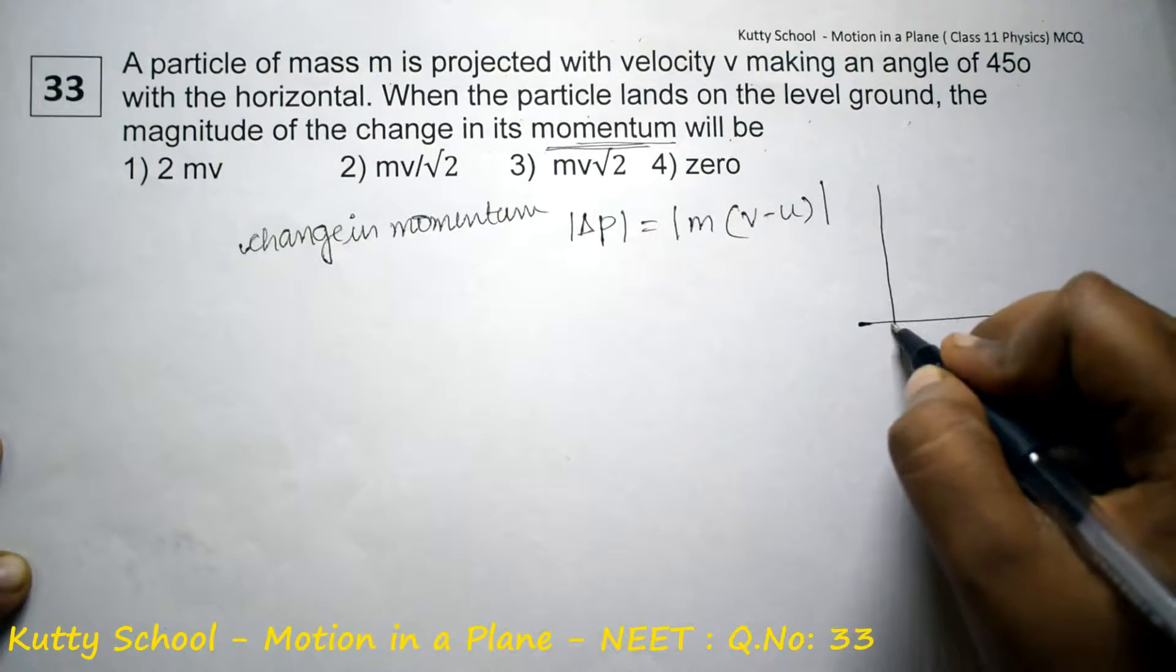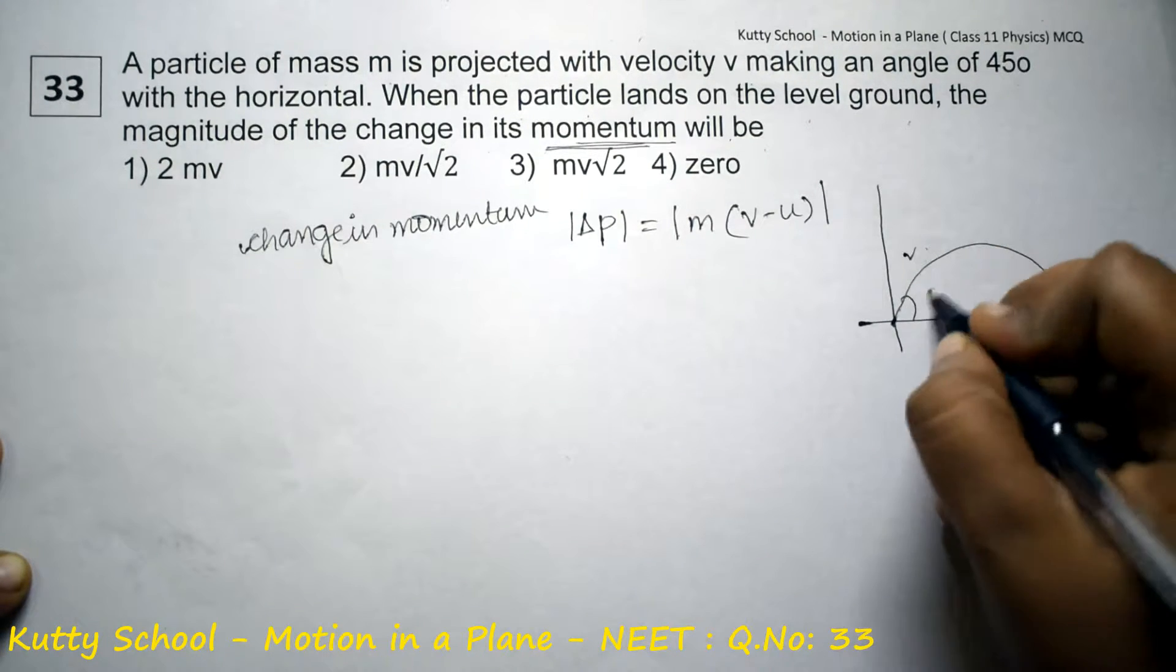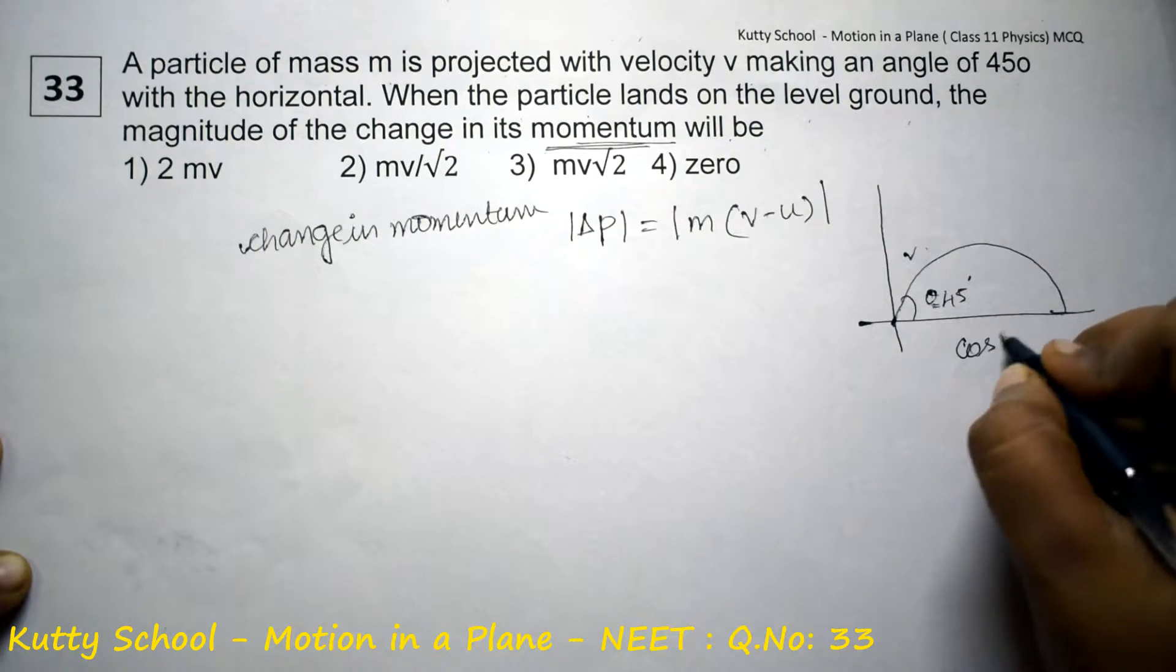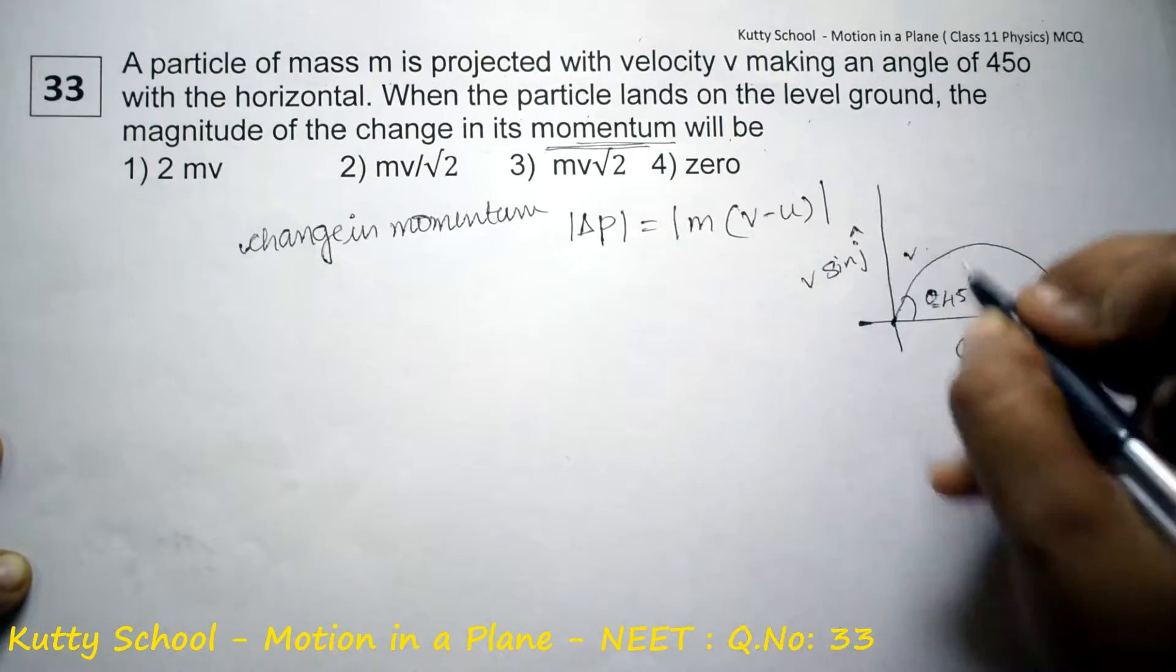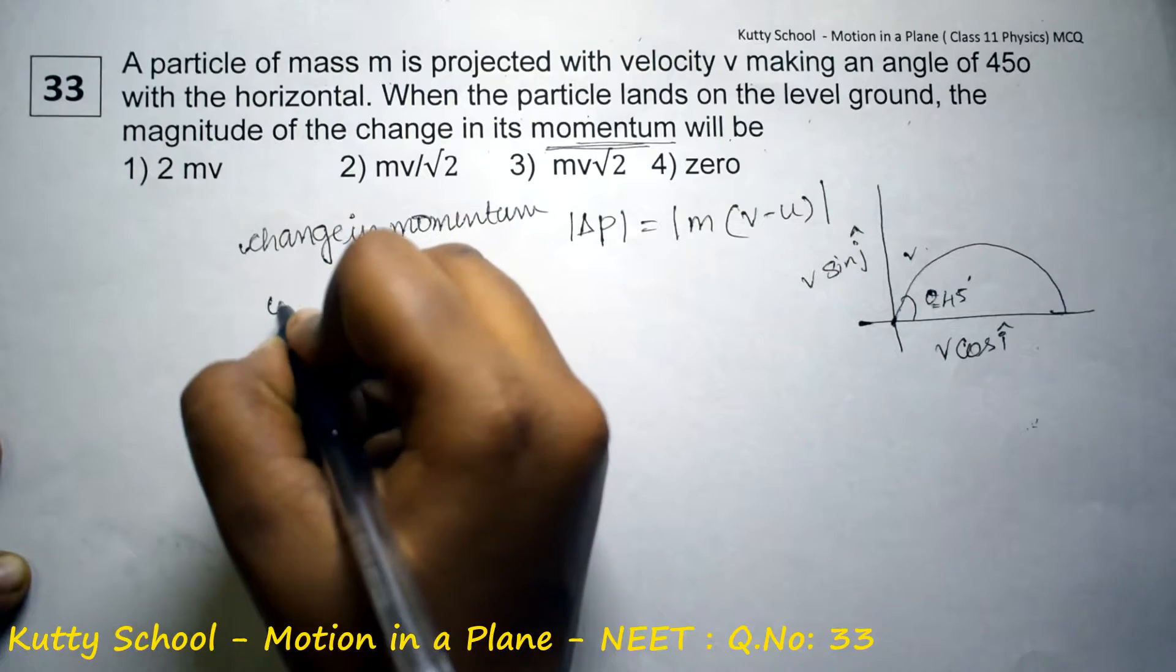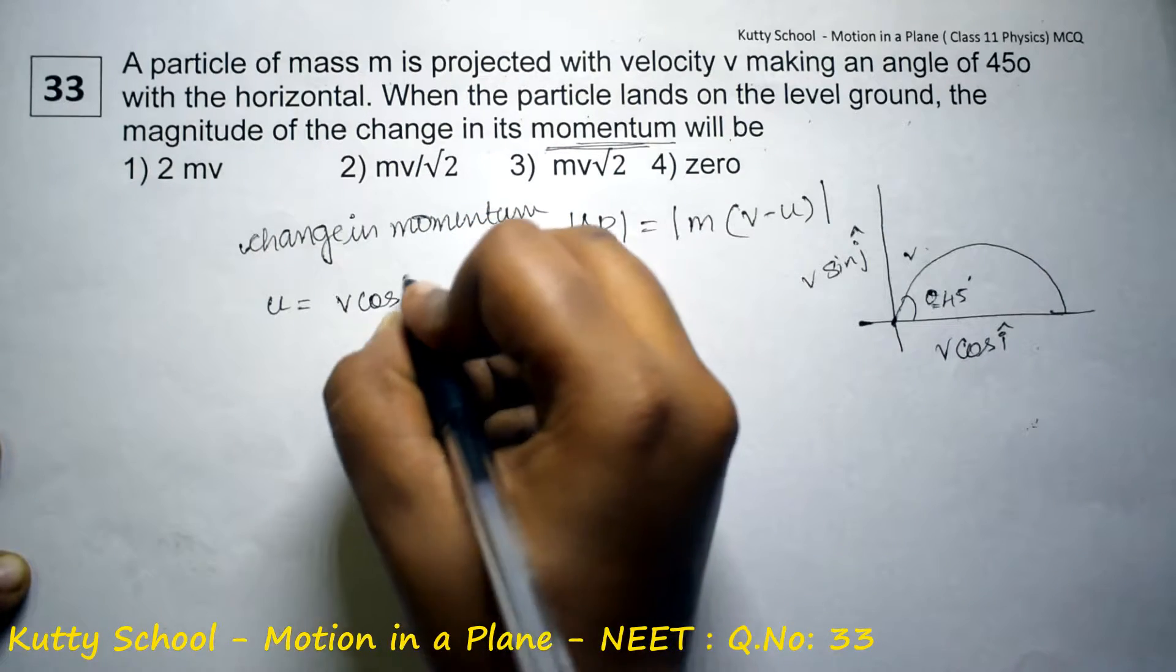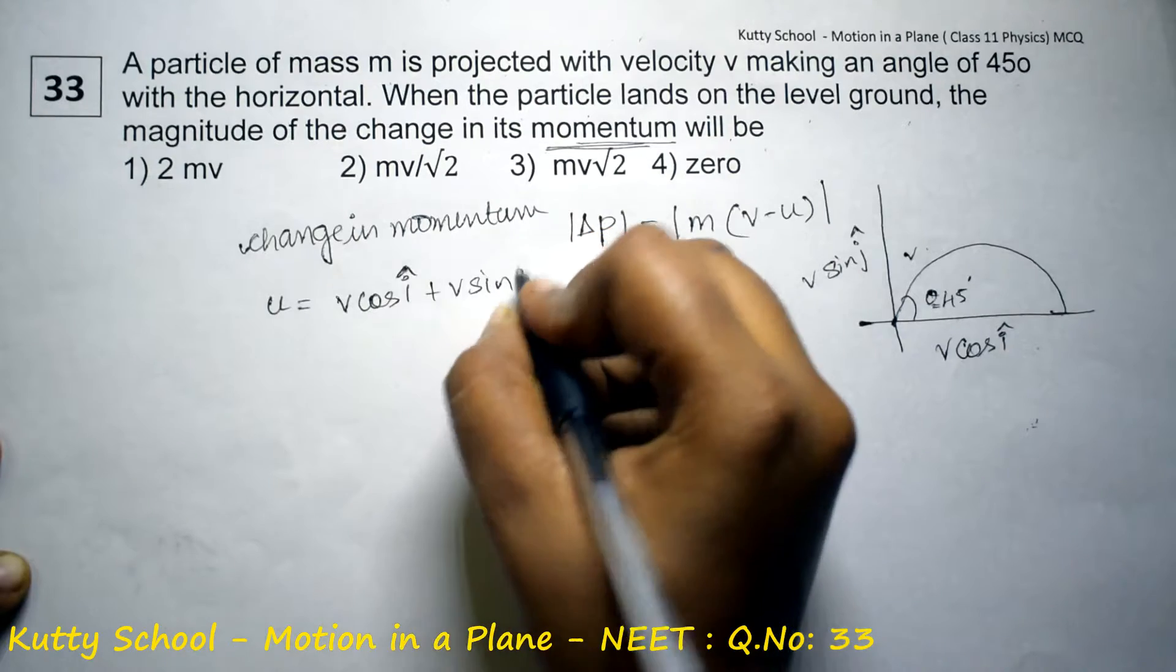Now the projectile velocity v at θ equals 45 degrees. The velocity equals v cos θ i cap plus v sin θ j cap.